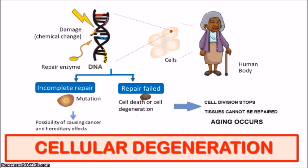So let's take a look at this diagram here. This highlights two pathways cells can actually take after damage occurs to the DNA structure, and both pathways can lead to tissue degeneration which causes aging. Firstly, when DNA is damaged and the repair mechanism isn't quite complete, mutations can arise that may lead to cancerous cells developing, which can form tumors in the body — and the older we get, the more prone our bodies are to developing different cancers. Secondly, if the DNA repair mechanism completely fails, it can actually lead to cell degeneration or even death. Therefore when cell division stops, tissues can no longer be repaired and the aging process occurs.